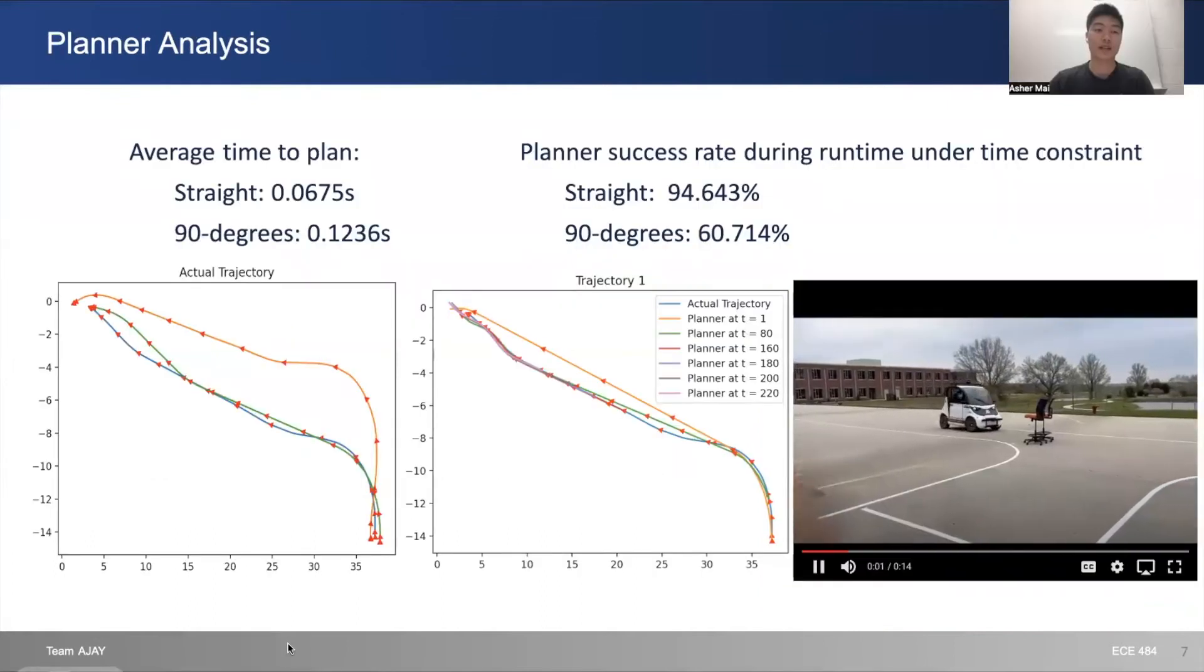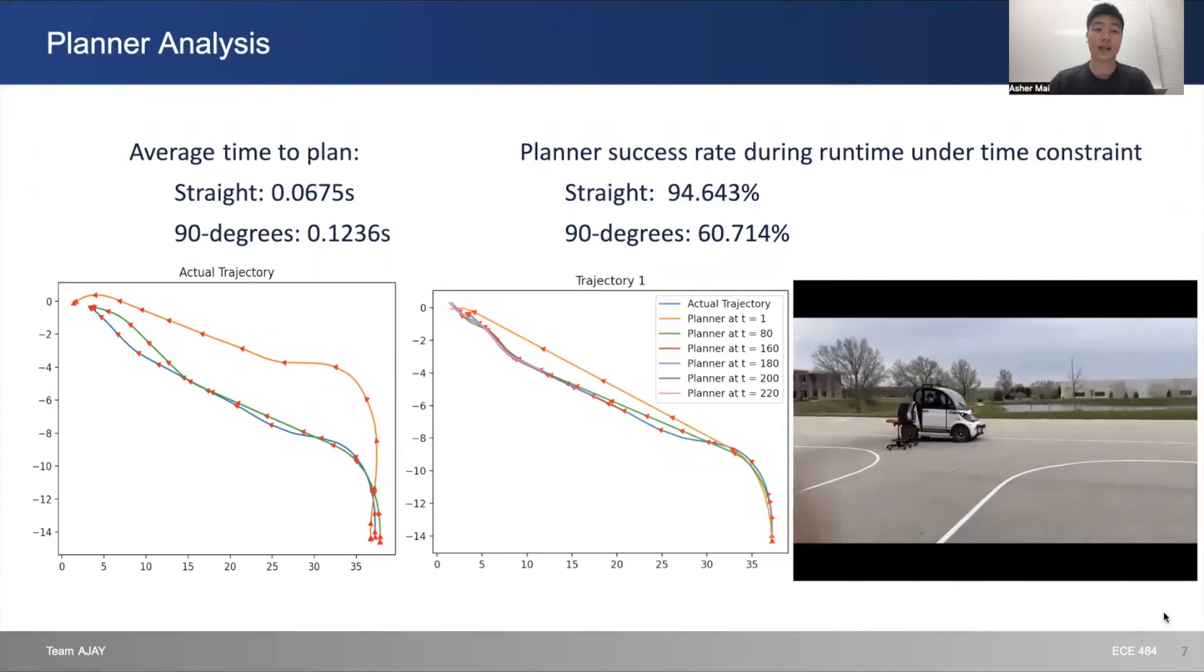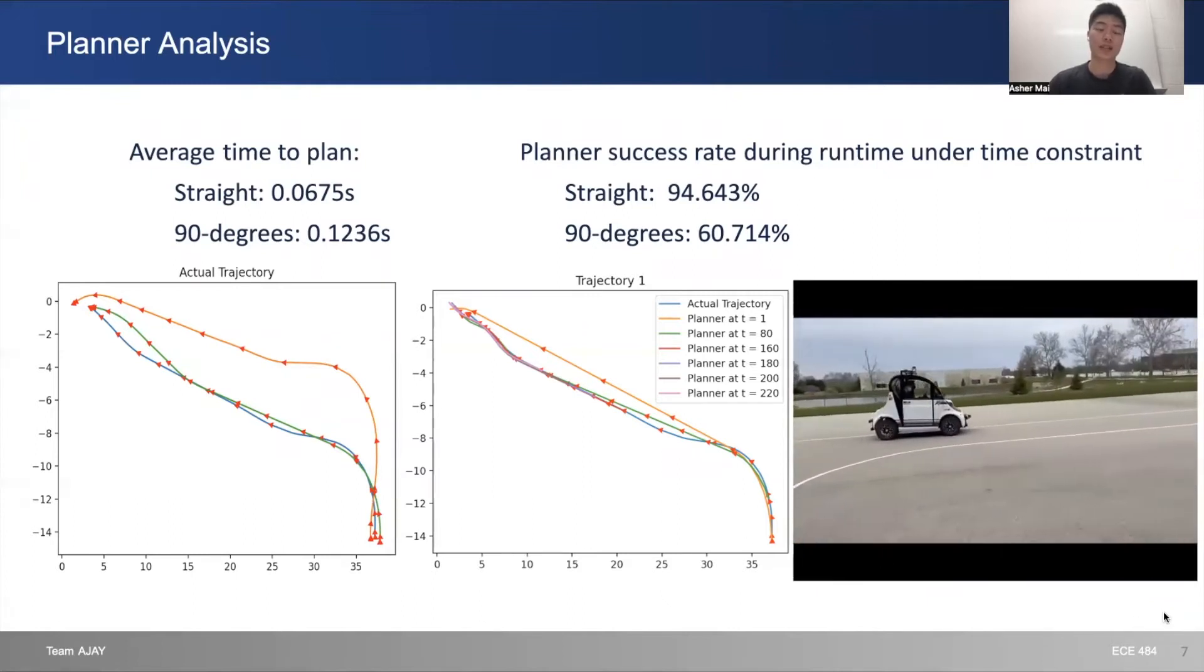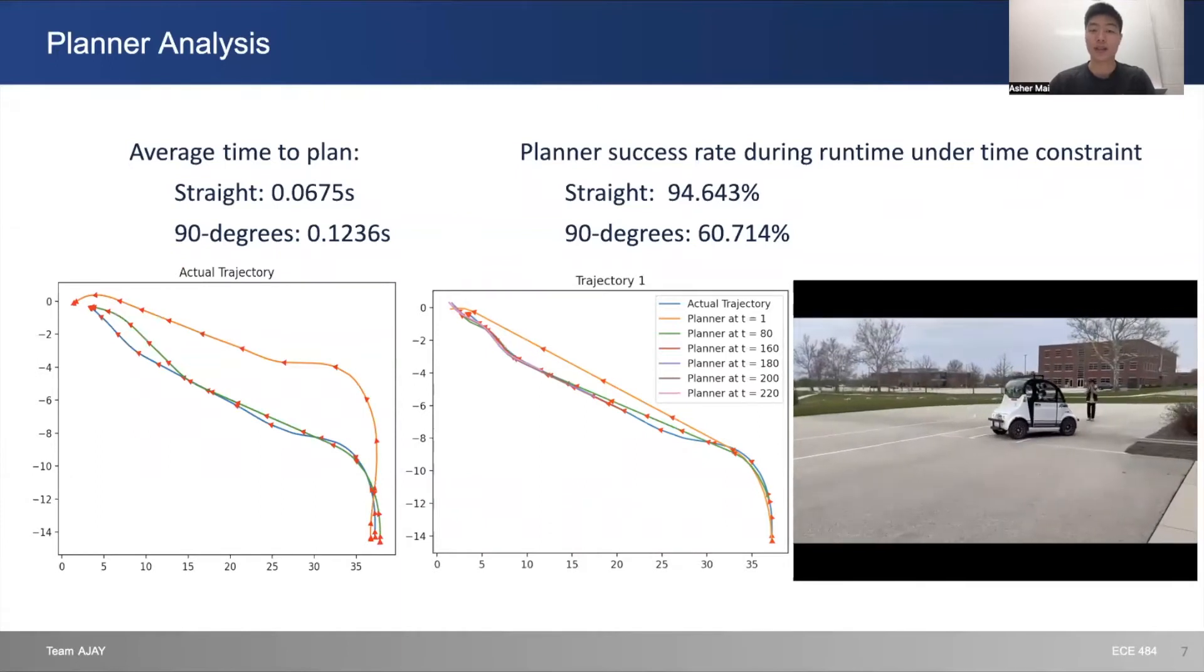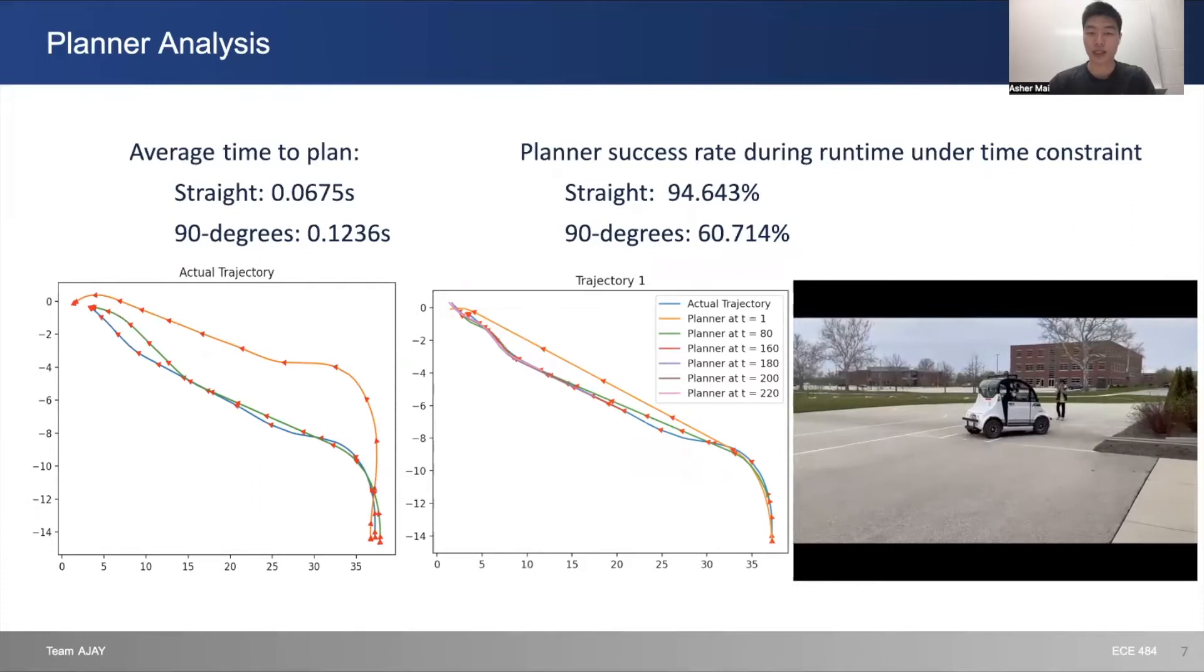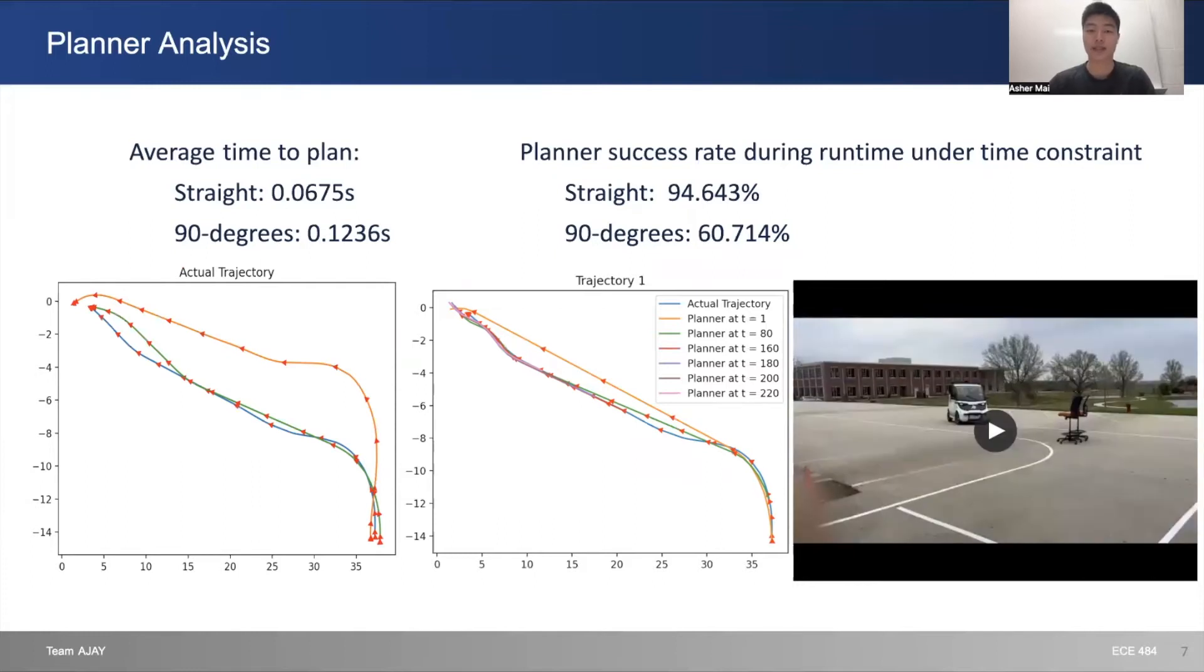Here we have some planner analysis. On the left, we can see the average time to plan. We can see that 90-degree parking is a lot harder to plan than straight into the parking spot. The success rate on the right shows 94% compared to 60% success rate under time constraint.